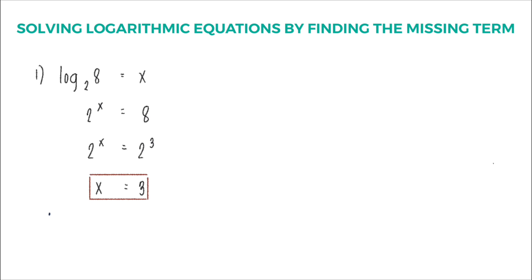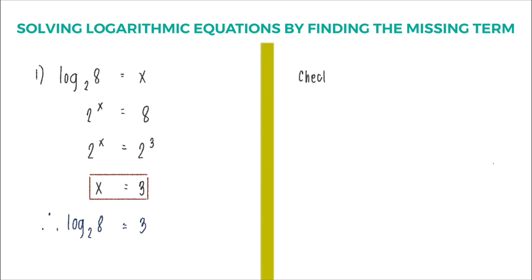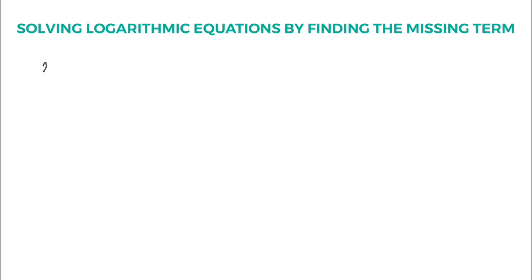Going back to our given logarithmic equation, logarithm of 8 with base 2 is equal to x — the value of x is 3. To check, substitute the value of the variable into the given equation and change 8 to its exponential form. Since 2 to the third power equals 2 to the third power, our answer is correct.